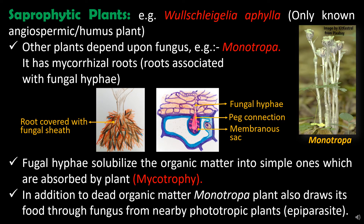In addition to dead organic matter, the Monotropa plant also draws its nutrients through the fungus from nearby photosynthetic plants. In that situation, this plant acts as an epiparasite — it is growing on a fungus which is itself a parasite of another living plant. So in that case, Monotropa cannot be called a true humus plant or true saprophytic plant.